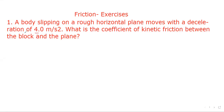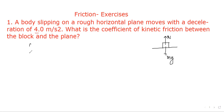Friction question number one: a body slipping on a rough horizontal plane moves with a deceleration of 4 meters per second squared. What is the coefficient of kinetic friction between the block and the plane? Here the body is on a horizontal surface. Normal reaction acts upward, weight mg acts downward, and friction is given by the formula μmg.